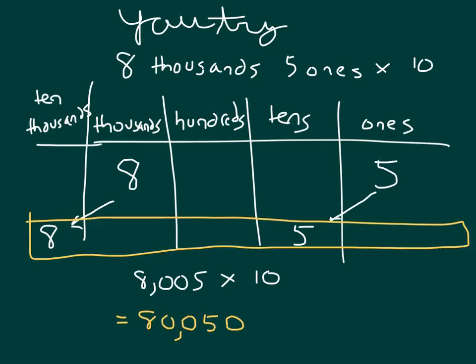Eight-thousand five times ten equals 80,050. Those eight-thousands times ten equals 80,000, and five ones times ten equals 50. We're continuing to use that place value chart to build our understanding of these larger numbers, even up to a million, and to understand how to place our commas within those numbers.